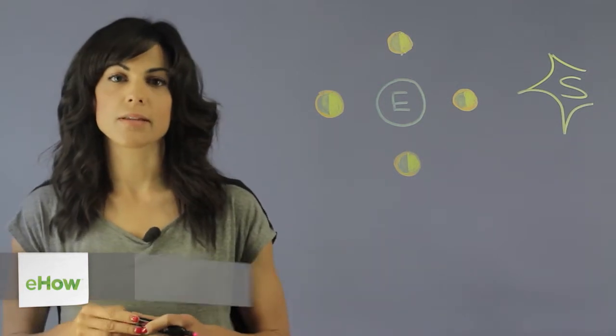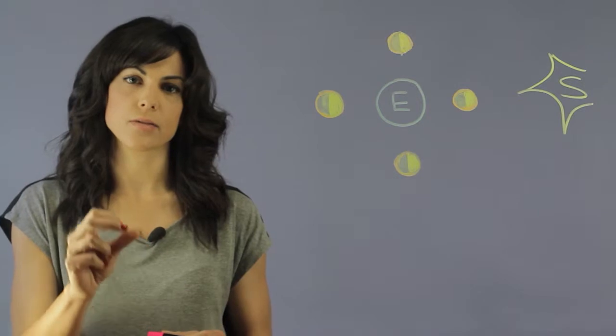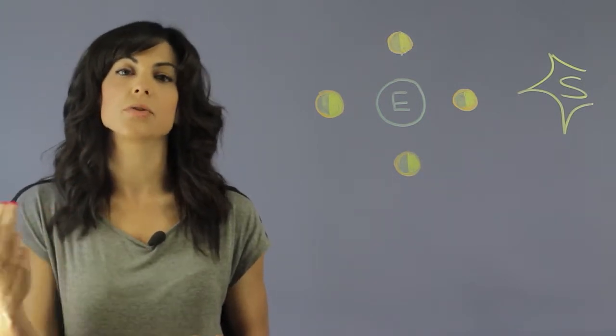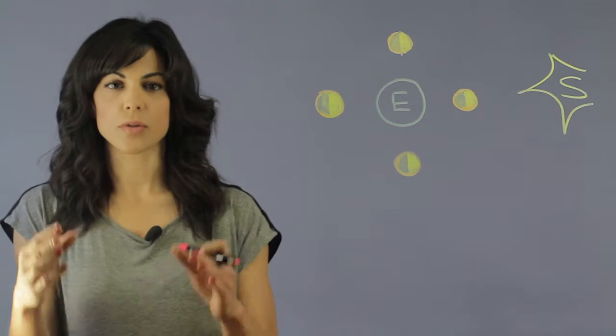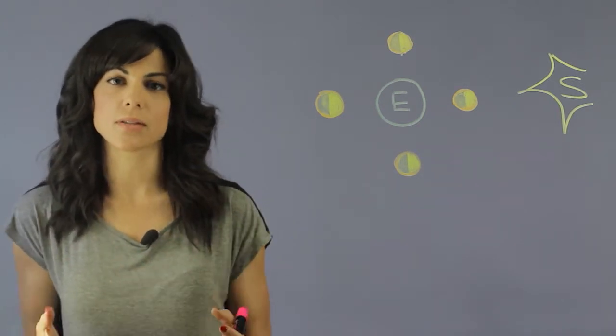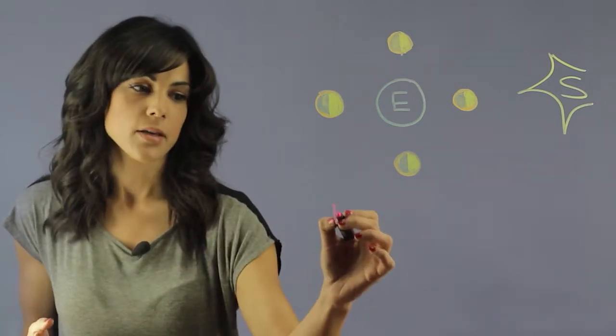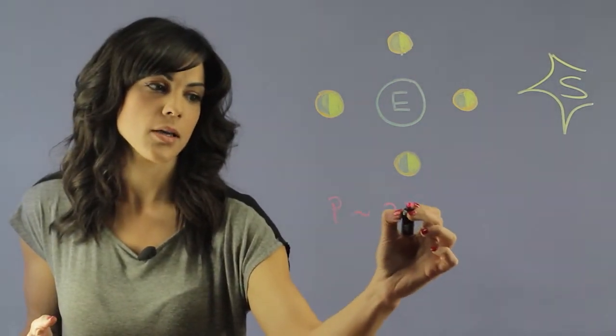So synodic month measures the time that it takes for the moon to start one phase and to come back to the same phase. So if we see a new moon, the time that it takes to go back to new moon, that's considered a synodic month and the period for the synodic month is 29.5 days.